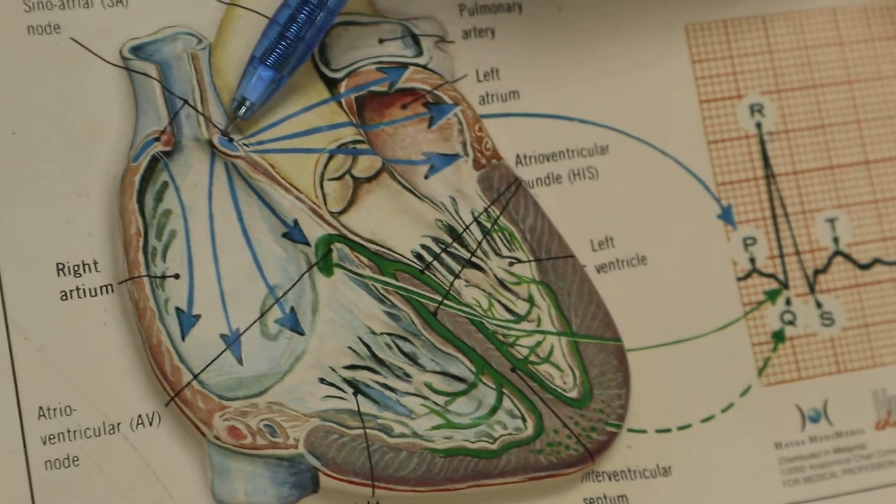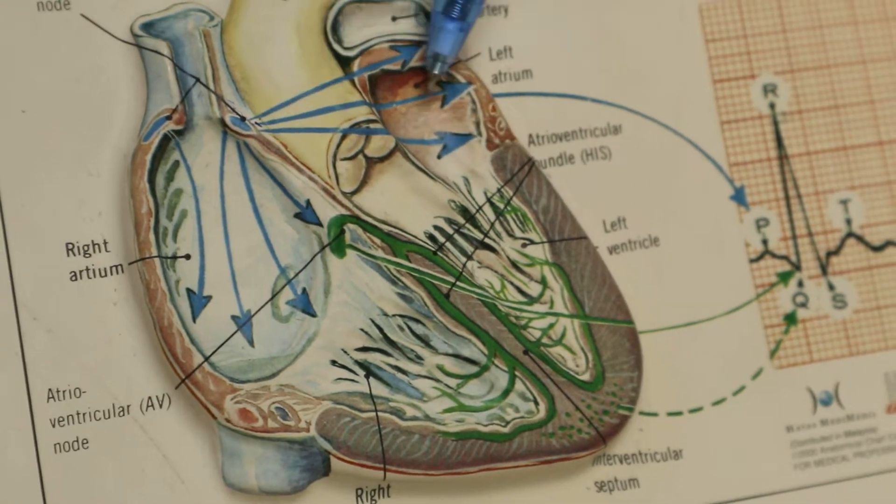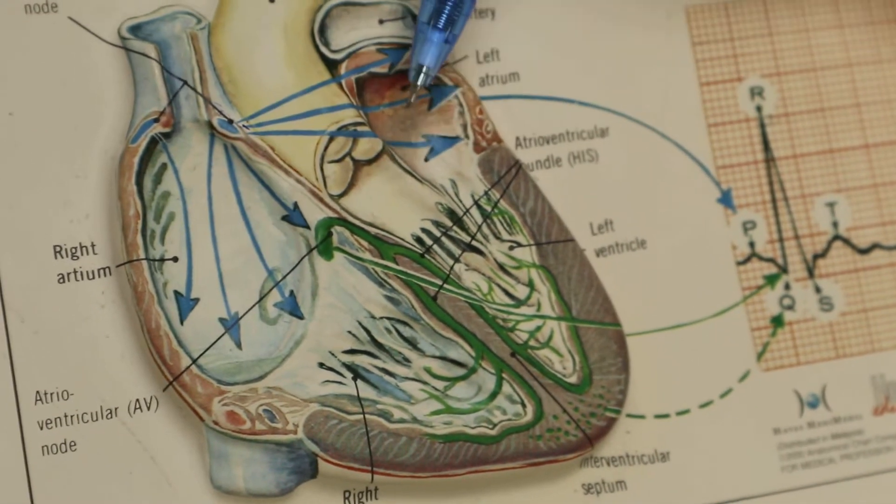The SA node fires waves of excitation that spread to the right atrium and the left atrium, helping the atria to contract.